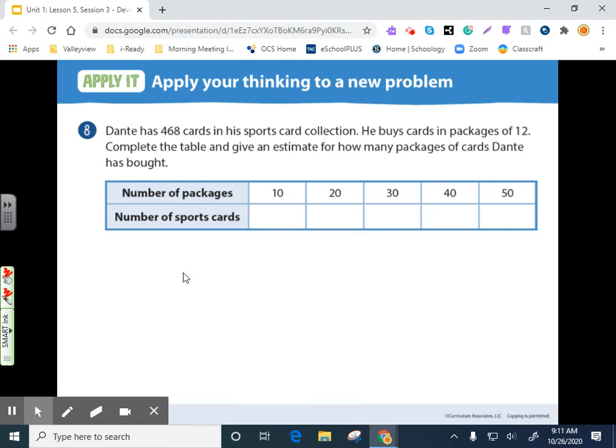Number 8. So we've got this table here to use for estimation. We're not going to use the table. We're just going to solve it. So Dante has 468 cards in his sports card collection. He buys cards in packages of 12. Complete the table and give the estimate for how many packages of cards Dante has bought. So this is 468 cards divided by 12. And let's just set that up. Again, reading it from left to right, we've got 468 divided by 12.